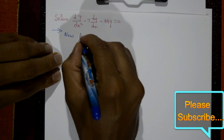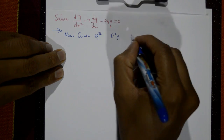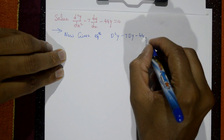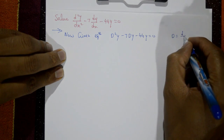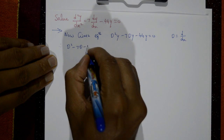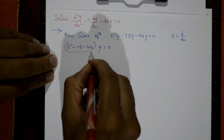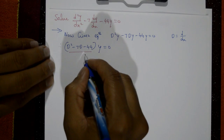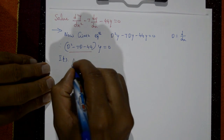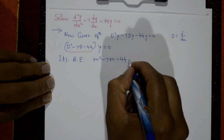The given equation is d² minus 7d minus 44 into y equal to 0, where d stands for d/dx. Therefore, the auxiliary equation is m² minus 7m minus 44 equal to 0.